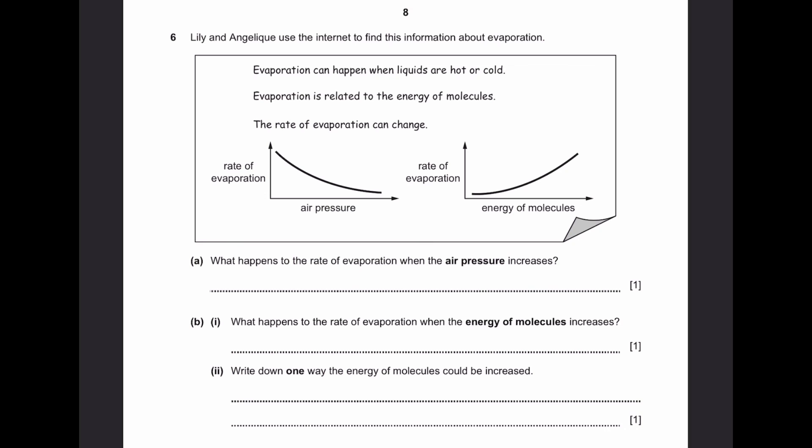Question 6. Lily and Angelique use the internet to find this information about evaporation. Evaporation can happen when liquids are hot or cold. Evaporation is related to the energy of molecules. The rate of evaporation can change. So when air pressure increases, the rate of evaporation decreases, as shown by the graph. When energy of molecules increases, the rate of evaporation proportionally increases. Part A: What happens to the rate of evaporation when air pressure increases? I've just said this. It decreases.